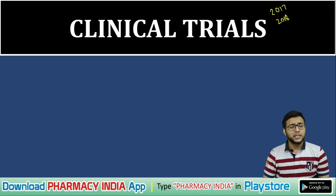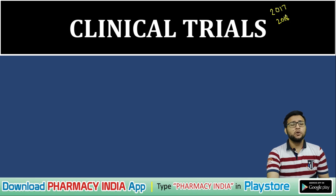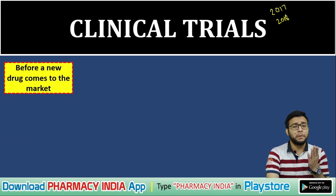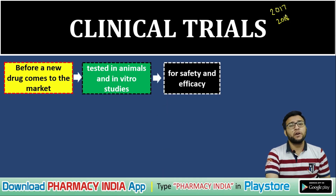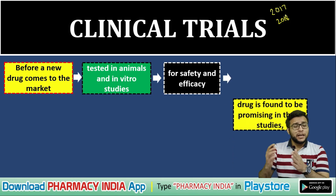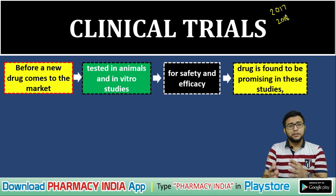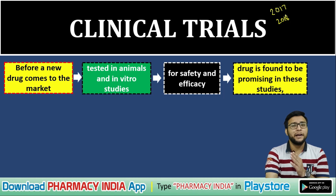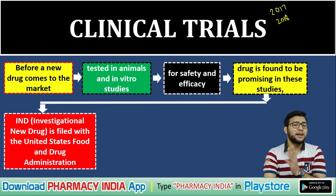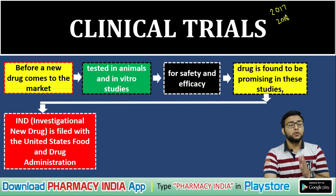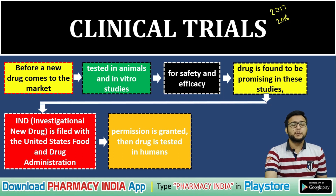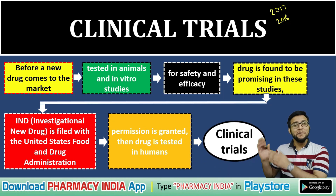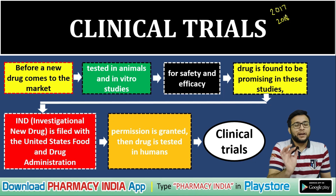Before starting the phases, let us first understand why we conduct clinical trials. When a drug is about to come to market, we test it on animals, conduct in vitro studies to know its safety and efficacy. Once safety and efficacy are established, an IND — Investigational New Drug — file is submitted to the USFDA, which is the main authority. The USFDA then grants permission to conduct trials on humans, and that is what we call a clinical trial.